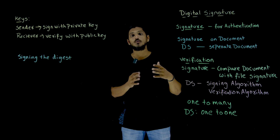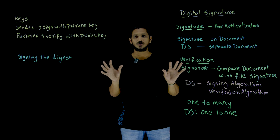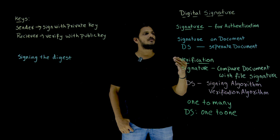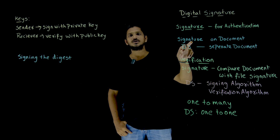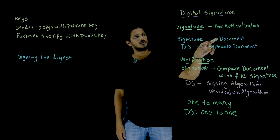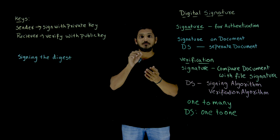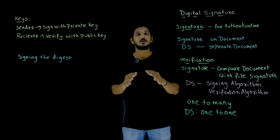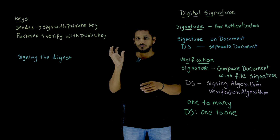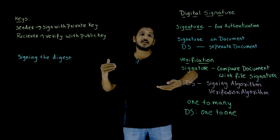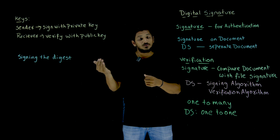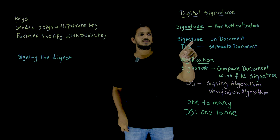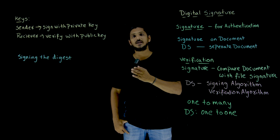How digital signatures provide authentication we are going to understand in our coming classes. Let's refresh some basic concepts required before we move on to the complex algorithms. For regular signatures, both the document and the signature are present on the same paper — wherever the document is, we sign on it. But digital signatures are not like that. If you have a message, based on the message we generate a separate signature. For each message, a separate signature is generated. So there are separate documents for message and signature.